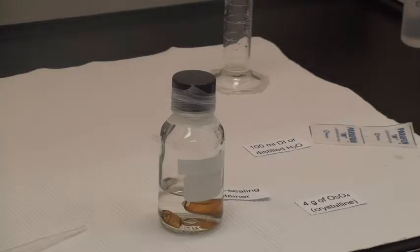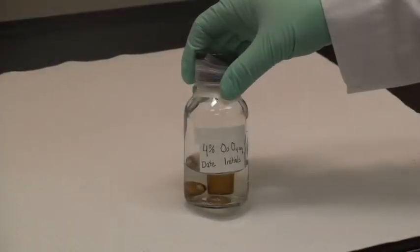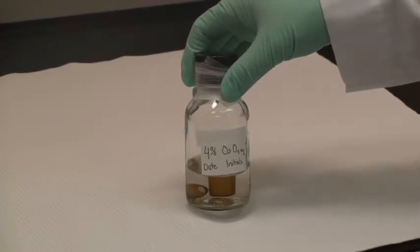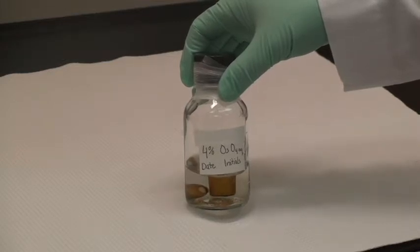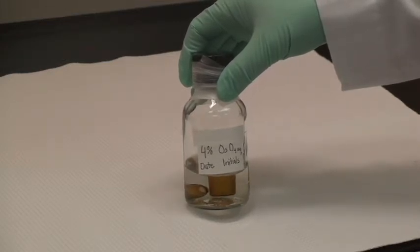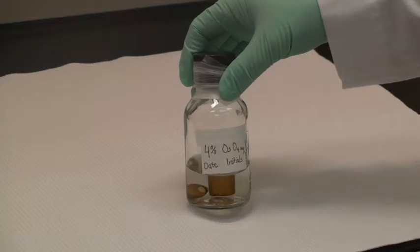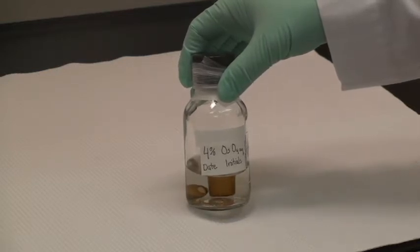The last step is to label it. We want to label it with the concentration, 4%, exactly what's in there, osmium tetroxide aqueous, then the date that it was prepared, and the initials of the preparer. And now you've made your solution of osmium tetroxide from crystalline form.